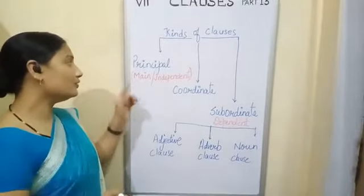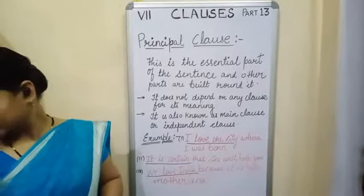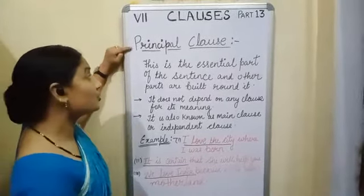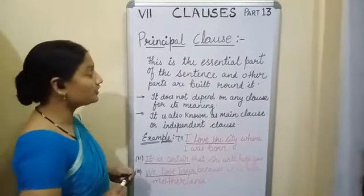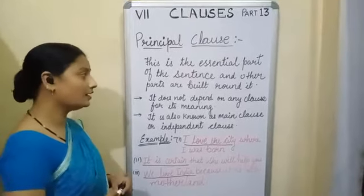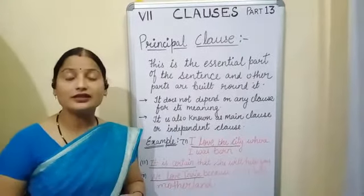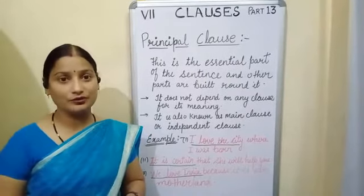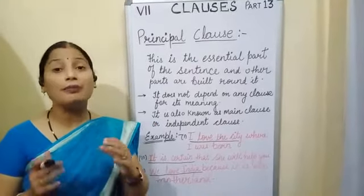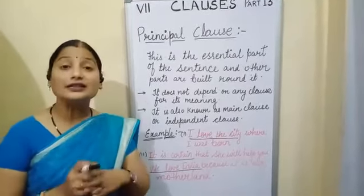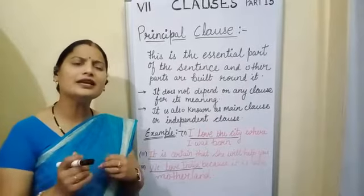Now we will see the principal clause in detail. The principal clause is the essential part of the sentence and other parts are built around it. This is also called the main clause because it is the most important part and does not depend upon any other clause for its meaning — it has a meaning of its own.